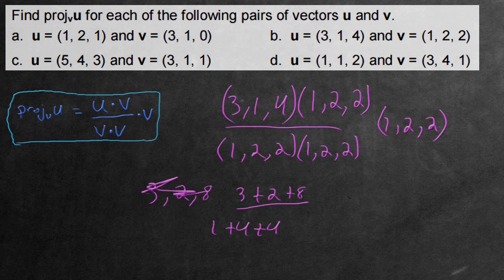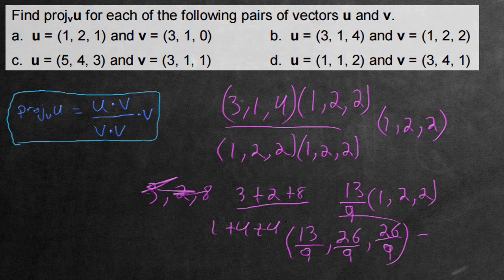So if we simplify this, we have 13 on top divided by 9 at the bottom, multiplying the (1, 2, 2). Let's distribute it through. So now we have the final answer of (13/9, 26/9, 26/9). This is the projection of the vector u along v. So this is the answer.